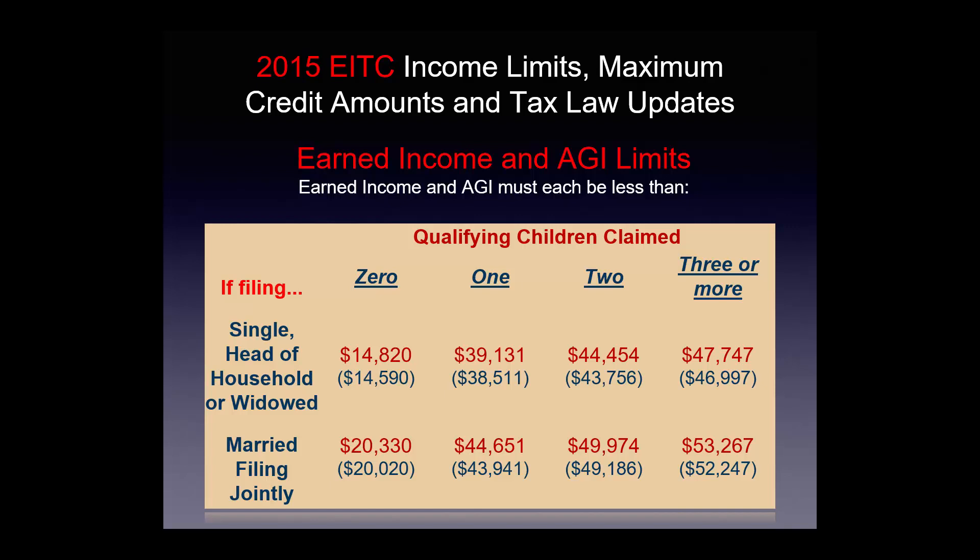For instance, if you are single with no dependents for 2015, your earned income must be less than $14,820. If you're single or head of household with three or more dependents, your earned income has to be less than $47,747 for 2015. For married filing jointly, $53,267 with three or more dependents is the AGI limit for the earned income credit.